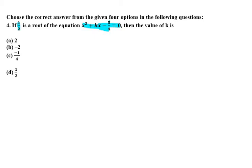So here the value for x is given to us, that is half. x equals half. Now we have the equation as x square plus kx minus 5 over 4 equals 0. So we will put the value of x as half.